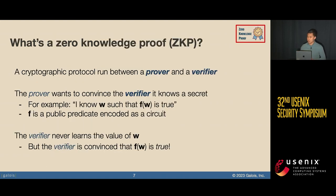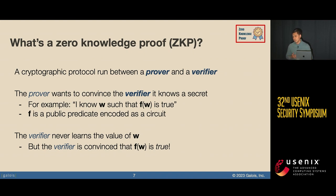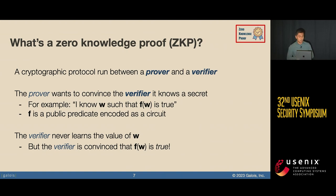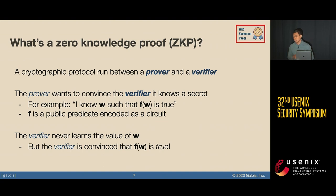A bit of background on zero-knowledge proofs: they are a cryptographic protocol between two parties, a prover and a verifier. The prover wants to prove to the verifier that it knows some secret — called a witness W — without revealing what that secret is. You want to show that W satisfies some predicate F, and F is typically encoded as a circuit, either a Boolean circuit or a circuit over a large prime field.